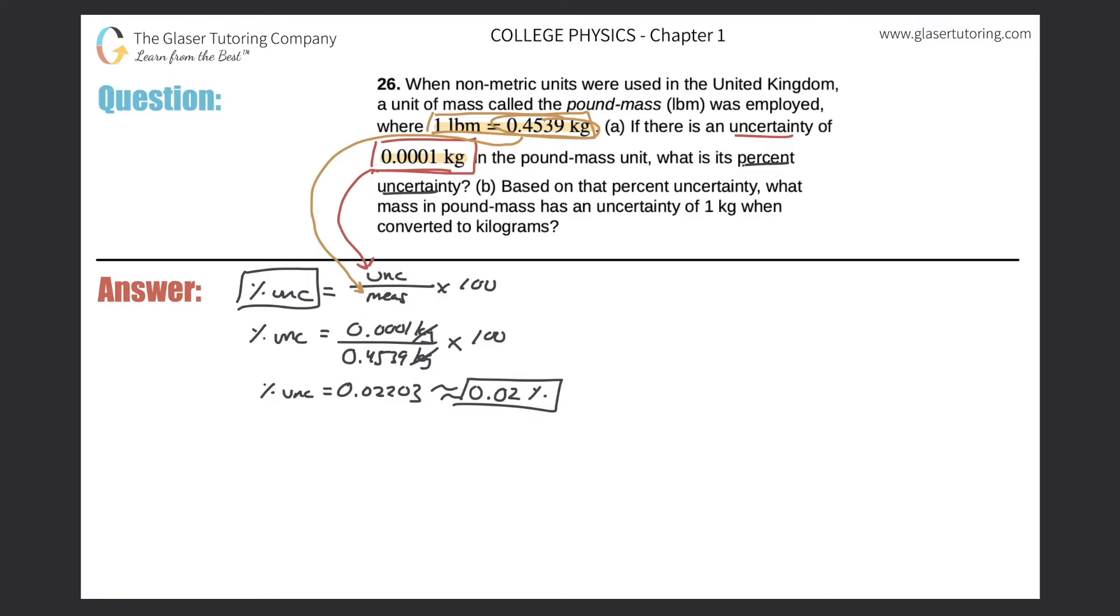Okay, so that was part A. Now let's take a look at part B. So it says based on that percent uncertainty, so meaning the percent uncertainty that we just calculated, what mass in pound mass has an uncertainty of one kilogram when converted to kilograms? Okay, so it sounds a little confusing, but let's try to pick it apart. So first I notice what they're giving me. So they're saying based on that percent uncertainty, and then they're asking now about a mass in pound mass, or they're saying what mass in pound mass has an uncertainty of one kilogram. So they're actually giving us an uncertainty value. So notice, do you know a relationship between these two: percent uncertainty and uncertainty? Yeah, you might be thinking about the formula, and you would be correct. So let's actually write that formula down.